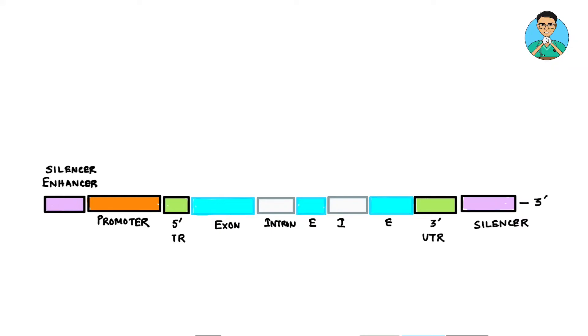In this video of the USMLE high yield series, let us learn about the functional organization of eukaryotic gene. So we all know that gene is nothing but a part of the DNA. So suppose this is a DNA fragment and in this DNA fragment a small part is known as a gene. For example, this part for us can be a gene.